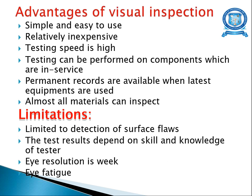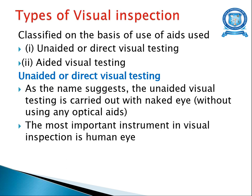Advantages of visual inspection: it is very simple and easy to use, inexpensive, testing speed is high, testing can be done on components which are in service, permanent records can be maintained, and you can inspect almost all materials. Limitations: it is limited to detection of surface flaws, test results depend on the knowledge and skill of the tester, eye resolution is normally weak, and eye fatigue can affect the inspection. There are two types of visual inspection: unaided (direct) visual testing and aided visual testing.